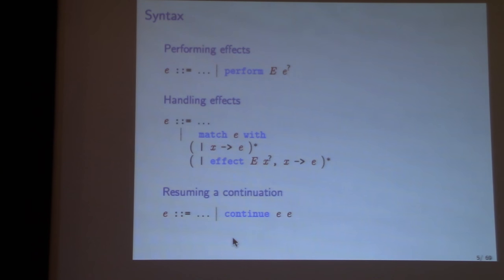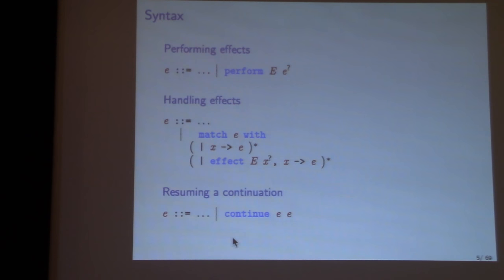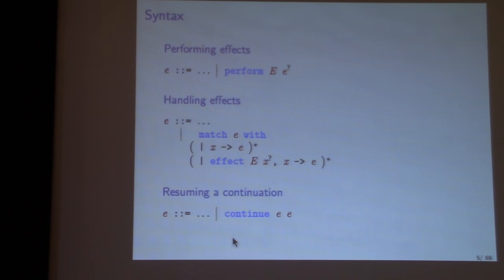There are three new expressions: perform, which performs an operation E possibly with a parameter; handle, which handles E possibly with its parameter and a continuation; and continue, which continues a continuation with a parameter. In most treatments of algebraic effects they just use normal functions for continuations, but for reasons that will become apparent, they are separated into their own type with an explicit apply operation called continue.